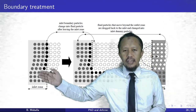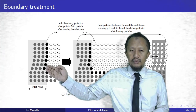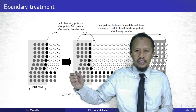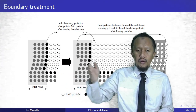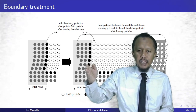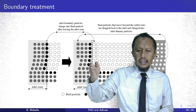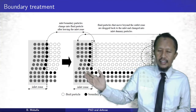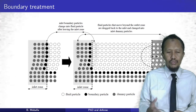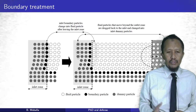At the inlet, we employ a moving wall: the inlet wall boundary moves with the same velocity as the velocity boundary condition. After the boundary particle moves into the inner domain, it becomes a fluid particle, and the dummy particle immediately follows to become the new boundary particle. We also use dummy particles at the inlet as a buffer to maintain mass concentration.